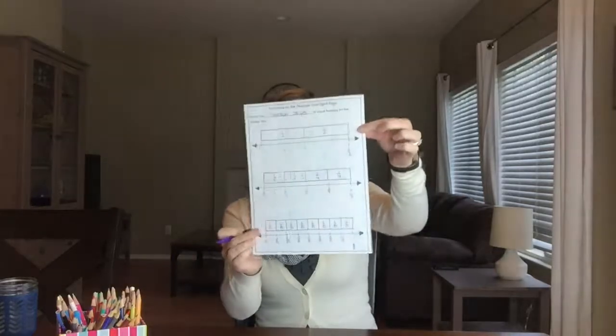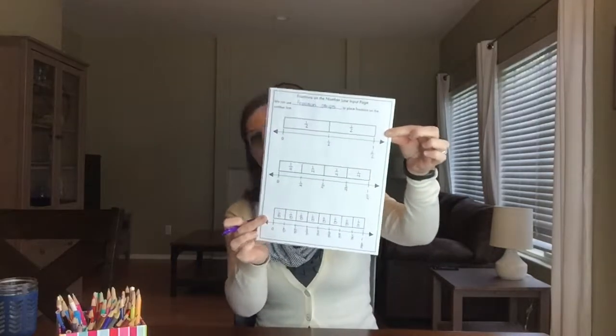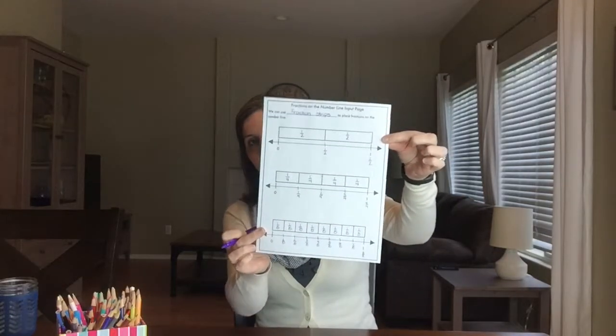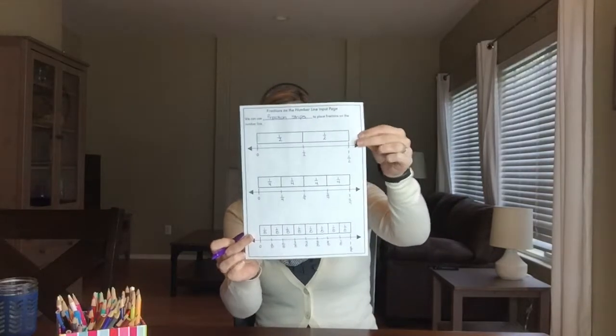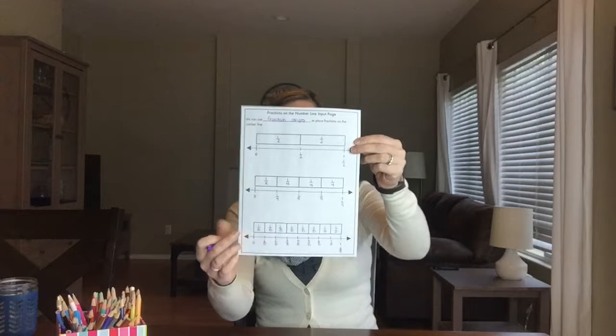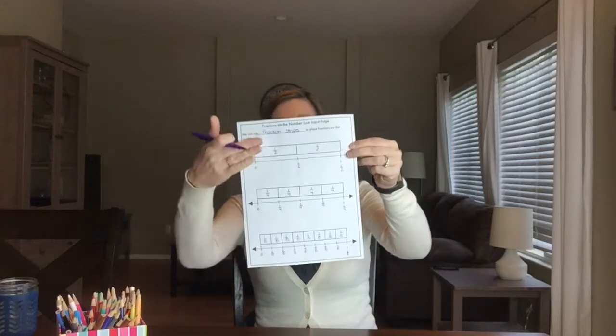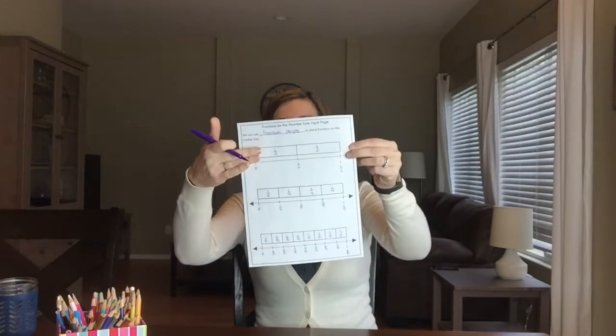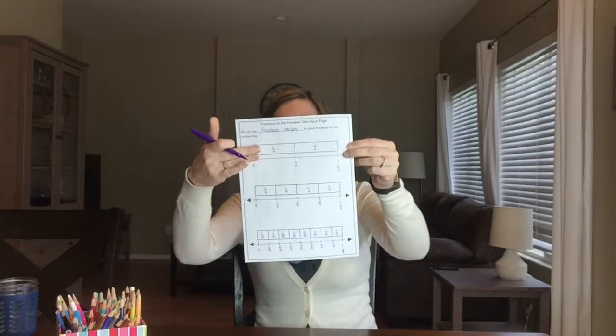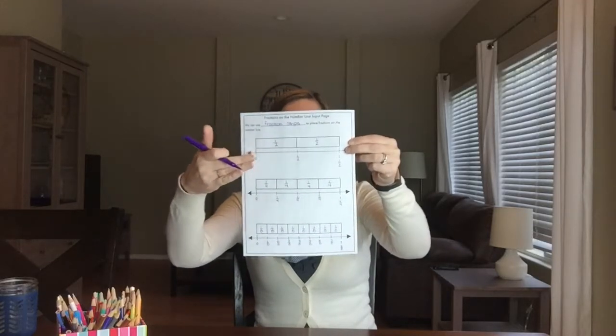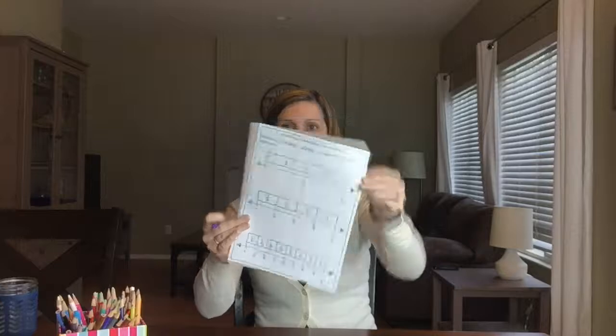Hopefully this is a good model for you, and you understand what we're doing in moving from fraction strips, which you've used before, to number lines, which are new. It's time to tackle that output page. I'll see you next time.